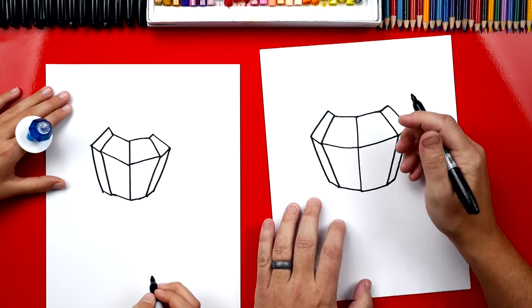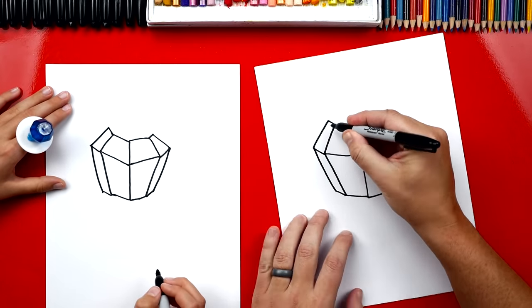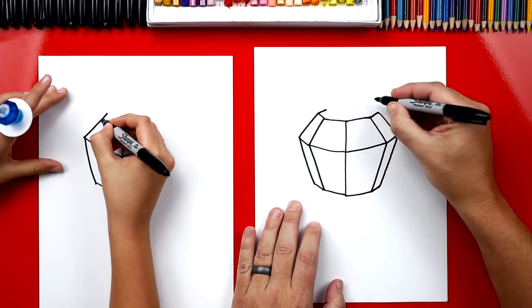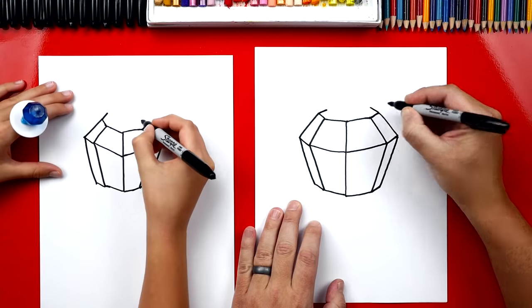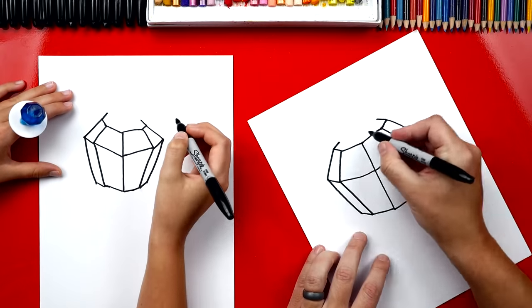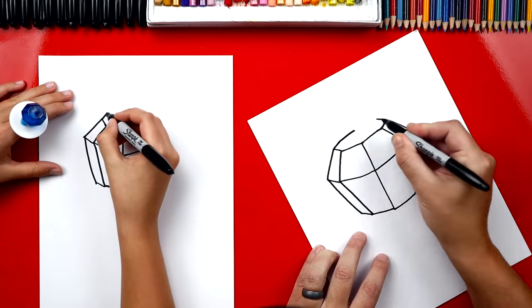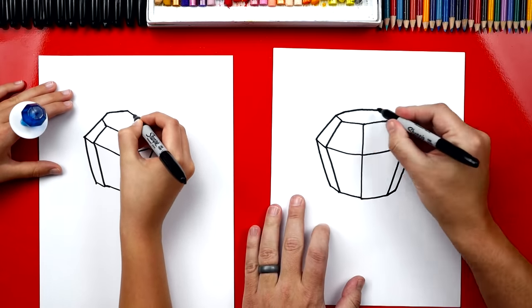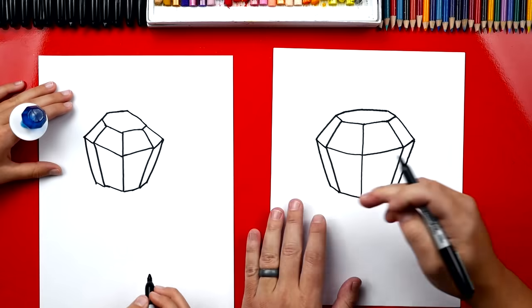Now we need to draw the top part. So, we're gonna draw a short line that matches this one, but it's gonna angle in. So, it looks like a V. And we'll do the same thing on the other side. Then we're gonna draw a line that goes up, and then back down to connect. It almost just looks like a curve when you're done. Good job! You did it!